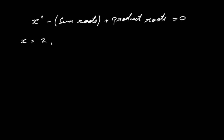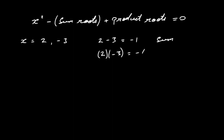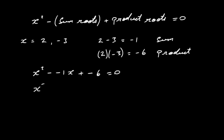Let's look at an example. Say we have roots x equals two and x equals minus three. Adding: two plus minus three equals minus one — that's the sum of the roots. Multiplying: two times minus three equals minus six — that's the product. So our quadratic is x squared minus (minus one)x plus (minus six) equals zero, which simplifies to x squared plus x minus six equals zero.